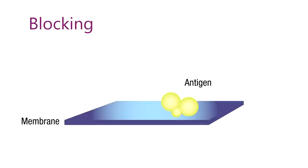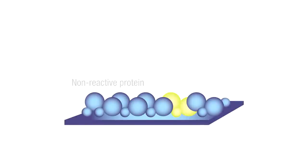The first step, called blocking, coats the membrane surface with a protein or other molecule that is non-reactive to the antibody that will be used to probe for your target protein or antigen.